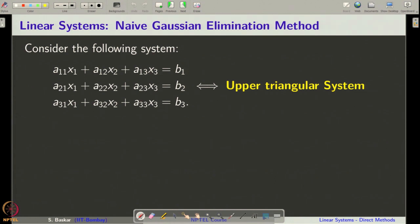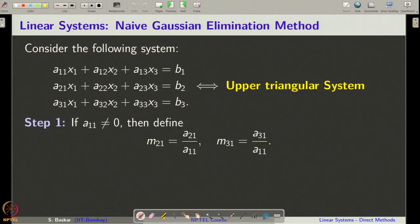We will implement the Naive Gaussian elimination method only for a 3 by 3 system. Recall that the Naive Gaussian elimination method first does an elimination process in which we convert the given system into an upper triangular system by doing certain elementary row operations. We will define certain elements like m21 and m31, but this holds only if a11 is not equal to 0. Therefore, we have to first check whether a11 is not equal to 0.